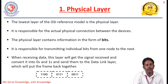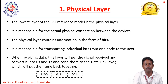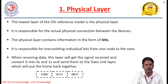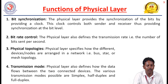The physical layer is the lowest layer of the OSI model. It is responsible for the physical connection between devices. The data is in the form of bits, which is nothing but information. It is responsible for transmitting individual bits from one node to another. The functions of the physical layer include: bit synchronization, bit rate control, physical topology, and transmission mode.